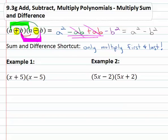So for example when we see x plus five, x minus five, we'll notice those are exactly the same except one has a plus, one has a minus. This is a sum and a difference. All we have to do is multiply the first times the first, x times x is x squared and the last times the last. Five times negative five is negative twenty-five and we're done because all the other terms will subtract out to zero.